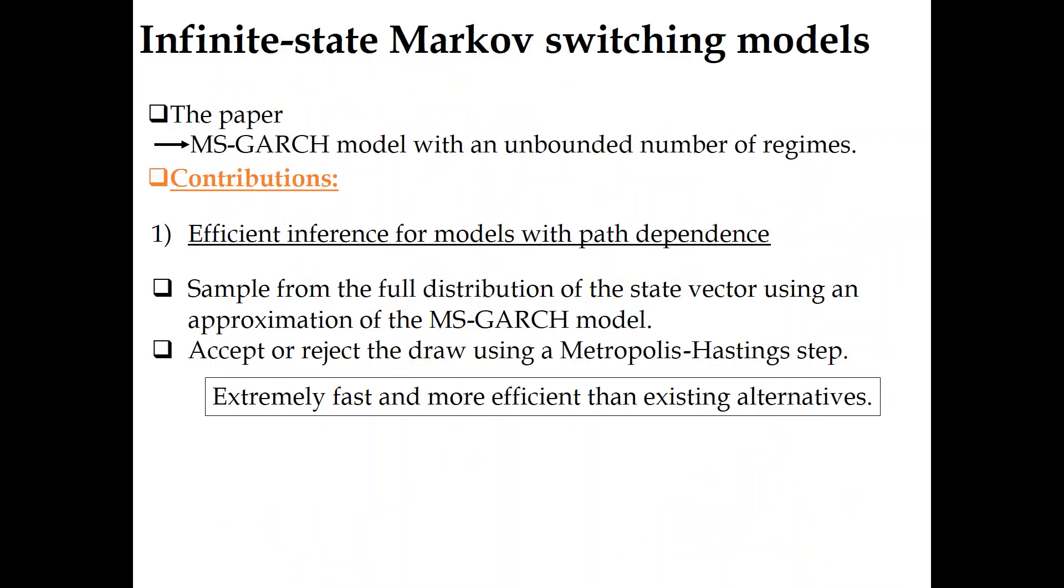The paper contributes to the Markov-switching literature by developing an efficient inference for estimating models that exhibit the path dependence issue. To do so, a new MCMC step is proposed, which consists in using a proposal distribution that simulates an entire state vector. This candidate is then accepted or rejected using a Metropolis-Hastings step.